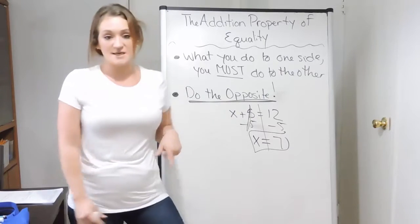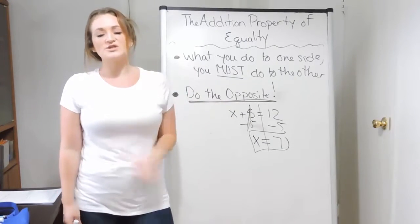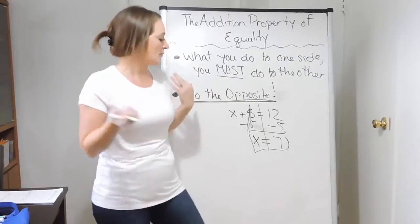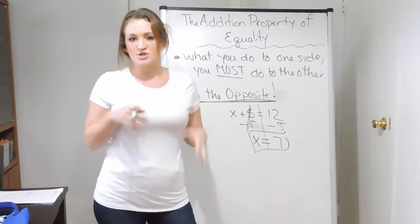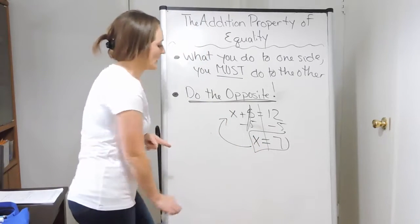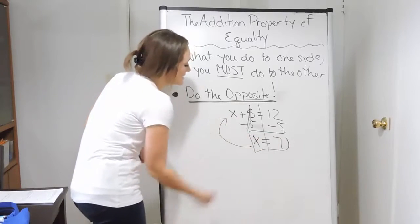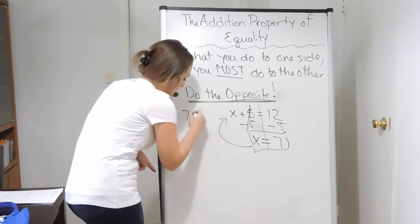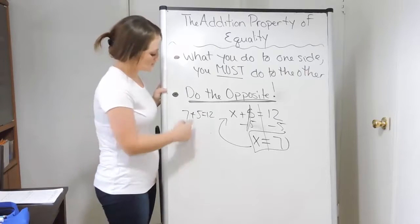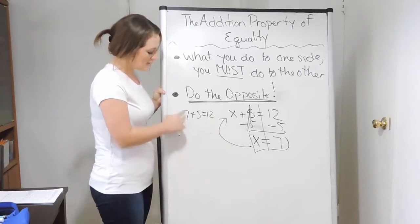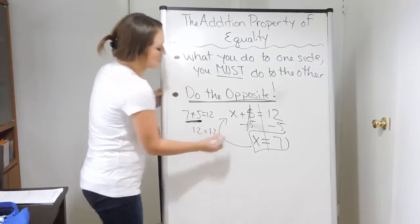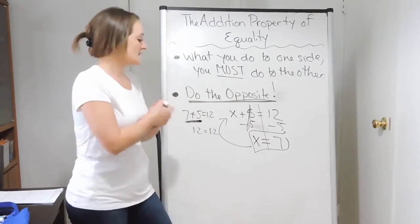The one thing you want to keep in mind with equations is that you are able to check your work. If I'm taking a big test and I really want to make sure my answer is correct, I take my answer and plug it back into my equation for the variable. If x is 7, I should be able to plug in 7 for x and keep the rest of the equation. So I had x plus 5 — if x is 7, that means I have 7 plus 5, which is 12. So I have a true equation, which means the answer is correct.